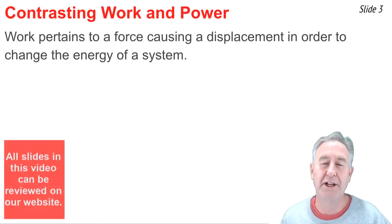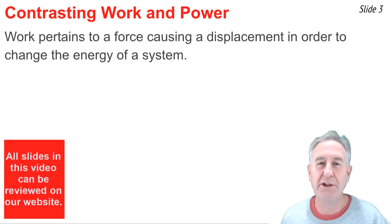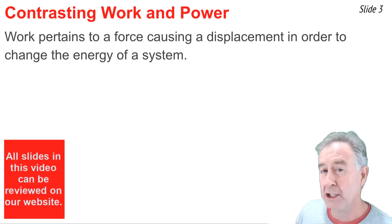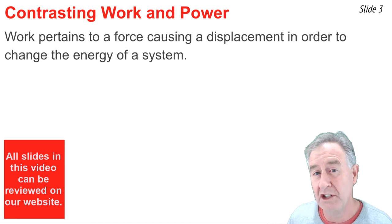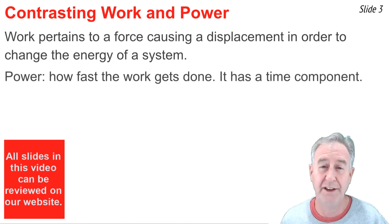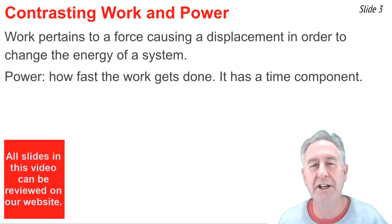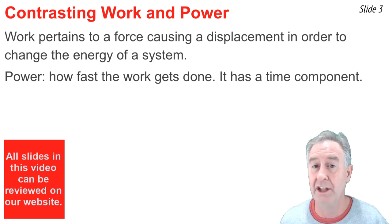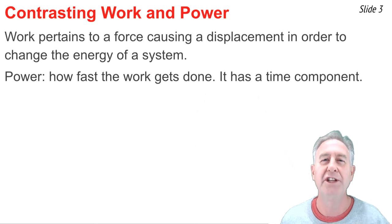We'll begin by contrasting work and power. Work has to do with a force that causes a displacement in order to change the energy of a system, but power has to do with how fast that work gets done. There's a time component associated with power. You could have two identical jobs being done in different amounts of time. The one that's done in the least amount of time is done fastest, and it has the greatest power.